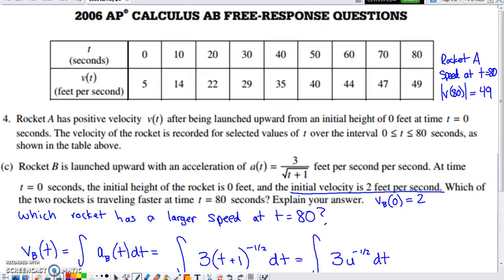The last part is the trickiest part, lengthiest part. They talk about a new rocket. Rocket B is also launched upward. They give us an acceleration function for Rocket B, measured in feet per second per second. Units sync up with Rocket A. At zero seconds, the initial height of the rocket is zero feet and the initial velocity is two feet per second. Which of the two rockets is traveling faster at time 80 seconds? Explain your answer. I realized right away if I'm trying to say which is traveling faster at T equals 80, I want to know which one has the bigger speed at that time. The speed of Rocket A at 80, we can take right out of the table. Speed is the absolute value of velocity, absolute value of 49 gives us 49 feet per second for the velocity and speed that Rocket A is traveling at, at T equals 80.